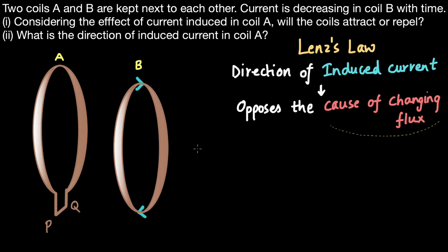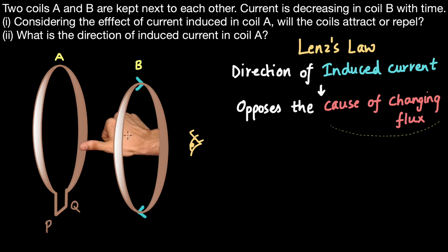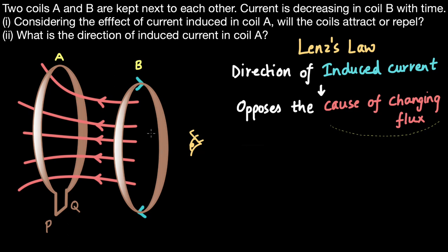We can figure out the direction of this magnetic field using the right-hand curl rule. Looking at coil B from the right, the current in the coil is moving in a clockwise direction. If we curl our fingers clockwise, the thumb points in the direction of the magnetic field. Now, because the current is decreasing, the strength of these magnetic field lines will also decrease.